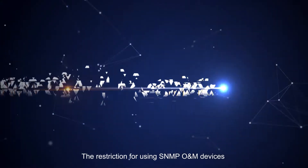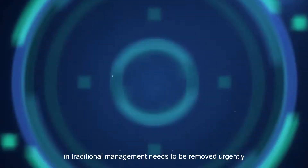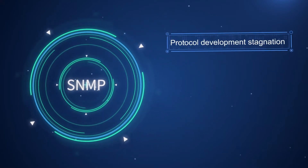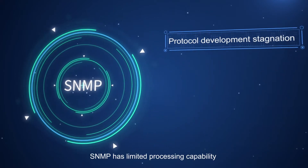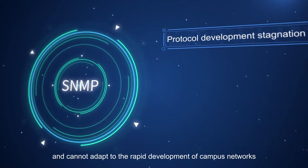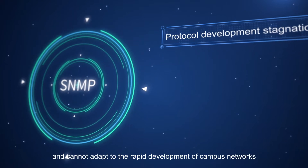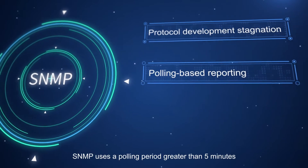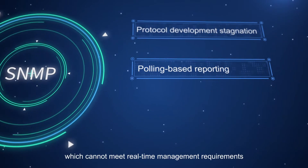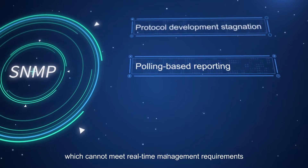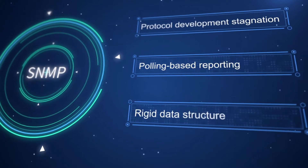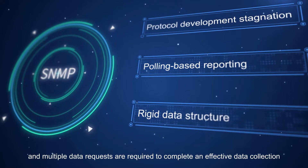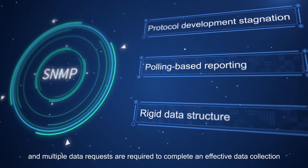The restriction of using SNMP for O&M devices in traditional management needs to be removed urgently. SNMP has limited processing capability and cannot adapt to the rapid development of campus networks. Polling-based reporting means SNMP uses a polling period greater than five minutes, which cannot meet real-time management requirements. SNMP also uses a rigid, fixed data structure definition, requiring multiple data requests to complete an effective data collection.